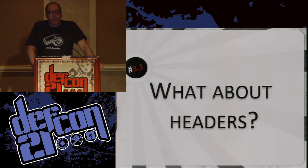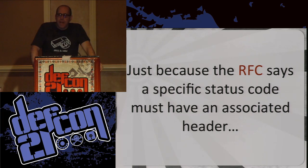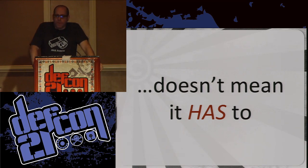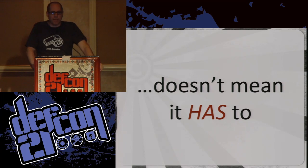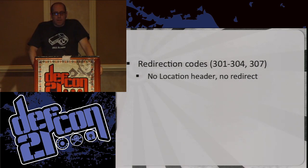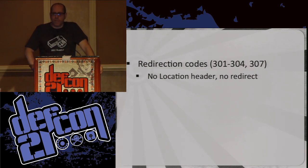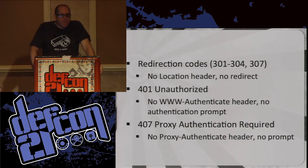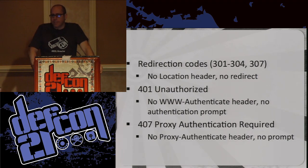So what about headers? RFCs say that if you're responding with a 3XX response code — whether it's 301, 302, or 303 — there should be a location header. But it doesn't mean it has to. If you respond and you don't have a location header, it just ignores the fact that it's meant to do a redirect and renders whatever content you give it. No location header, no redirect. You're responding with a 302, it's looking for the location header, doesn't find one, and instead of giving you an unhelpful error it just renders what you returned. The 401 unauthorized as well — if you're not sending back a www-authenticate header, it's not going to prompt you. And the 407 proxy authentication required — if you're not requesting the authentication, it's never going to prompt you.